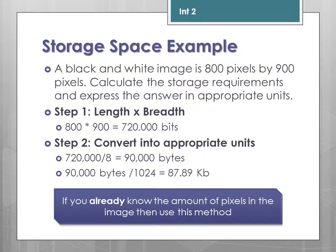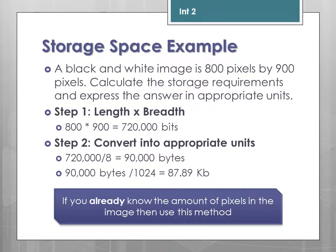For example, a black and white image is 800 pixels by 900 pixels. To calculate the storage requirements, multiply 800 by 900, which gives 720,000 bits. Converting to an appropriate unit: divide by 8 to get bytes — 90,000 bytes — then divide by 1024 to get kilobytes, giving approximately 87.89 kilobytes. Avoid rounding off until the end.